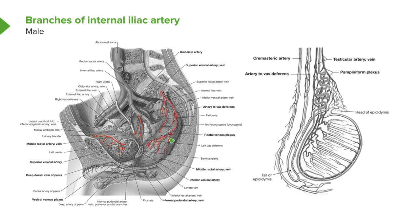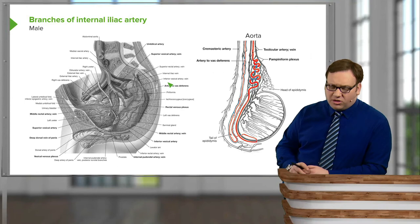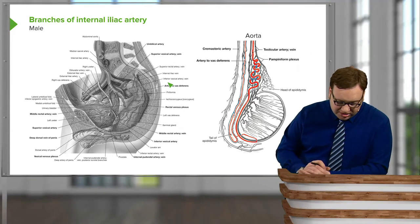In this diagram we can also see the superior rectal arteries running down on the lateral surfaces of the rectum. In this example we also have a middle rectal artery, arising just before the internal iliac exits the pelvis. The testes are included here to show that the testicular artery comes from the aorta, not from the internal iliac. The artery to the vas deferens runs alongside the vas towards the epididymis, showing the potential for collateral circulation between branches of the internal iliac and branches of the abdominal aorta.